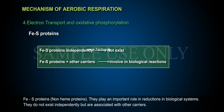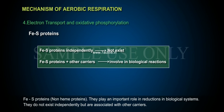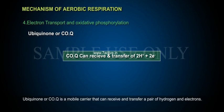Fe-S proteins are non-heme proteins that play an important role in reductions in biological systems. They do not exist independently but are associated with other carriers. Ubiquinone, or CoQ, is a mobile carrier that can receive and transfer a pair of hydrogen and electrons.